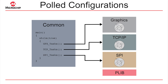This is what we mean by a polled configuration within MPLAB Harmony. Now if you've done this sort of thing before, you can quickly realize that if the graphics library spends two or three hundred milliseconds drawing a graphics image and the TCP/IP stack spends a couple hundred milliseconds processing kilobytes worth of packets, your SPI driver that was streaming audio a millisecond at a time has probably run out of data and you'll have gaps in your audio.